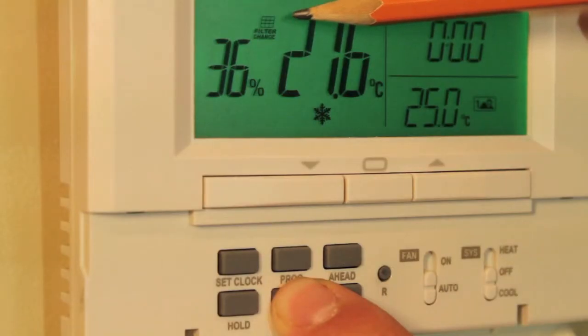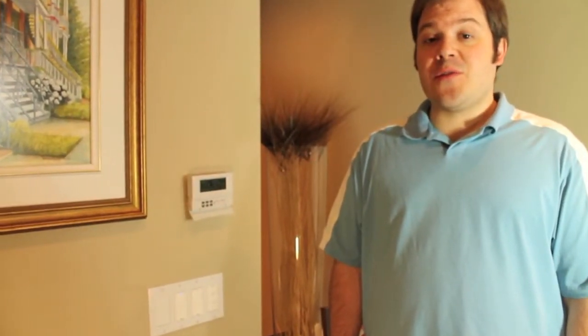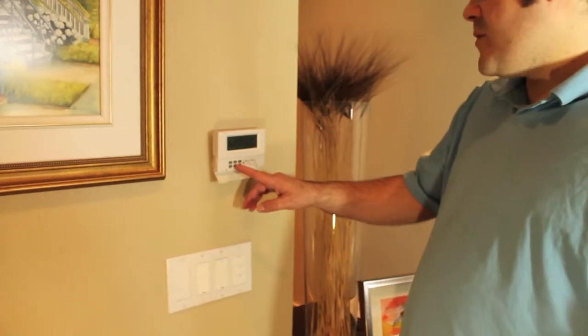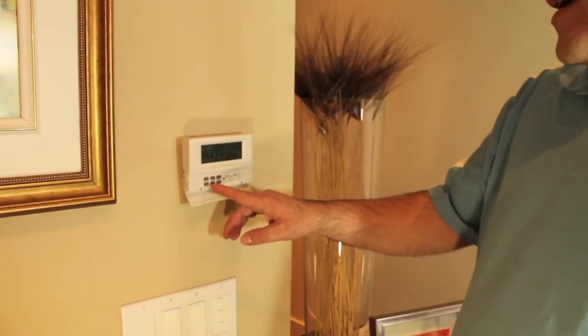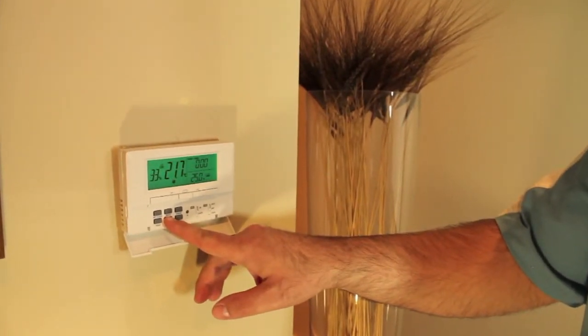The thermostat also keeps track of total number of hours of run time. When it reaches 500 hours of use it will display a symbol that says filter change. When this symbol appears it's suggesting that you change or clean the air filter in your furnace. You can reset the filter change warning for another 500 hours by pressing in the usage button until the filter change symbol disappears from the screen.